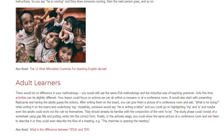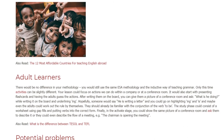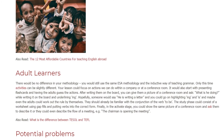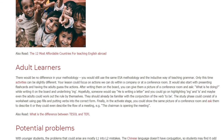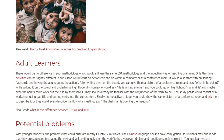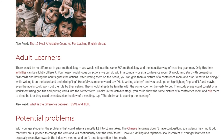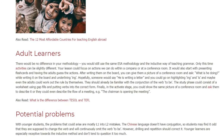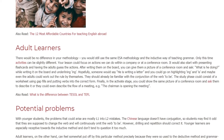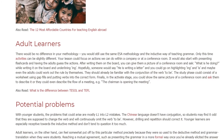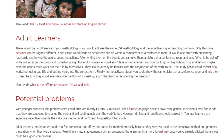For adult learners, there would be no difference in your methodology — you would still use the same ESA methodology and the inductive way of teaching grammar. Only this time, activities can be slightly different. Your lesson could focus on actions we can do within a company or in a conference room. It would also start with presenting flashcards and having the adults guess the actions. After writing them on the board, you can give them a picture of a conference room and ask: what is he doing?